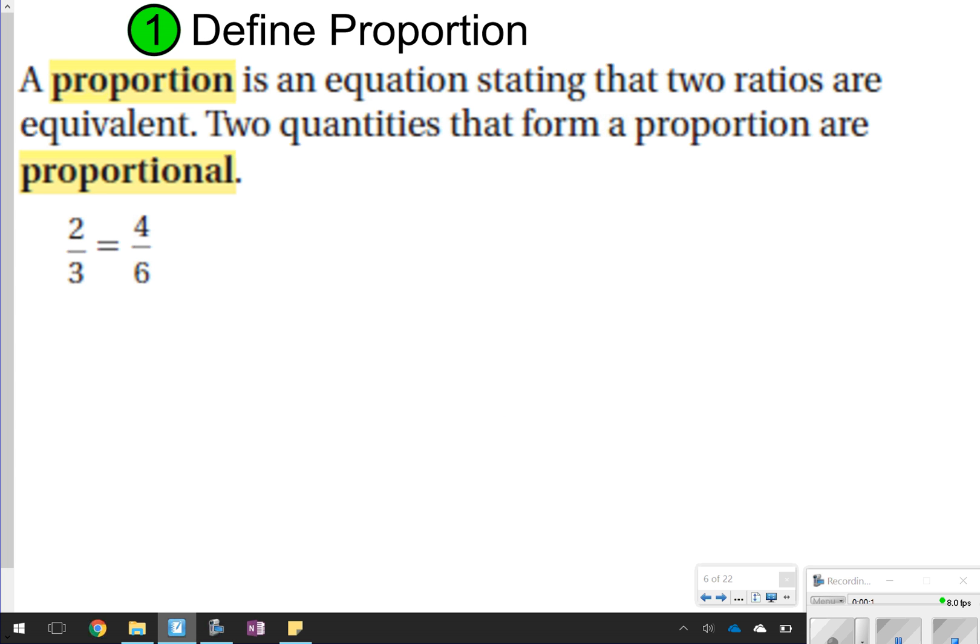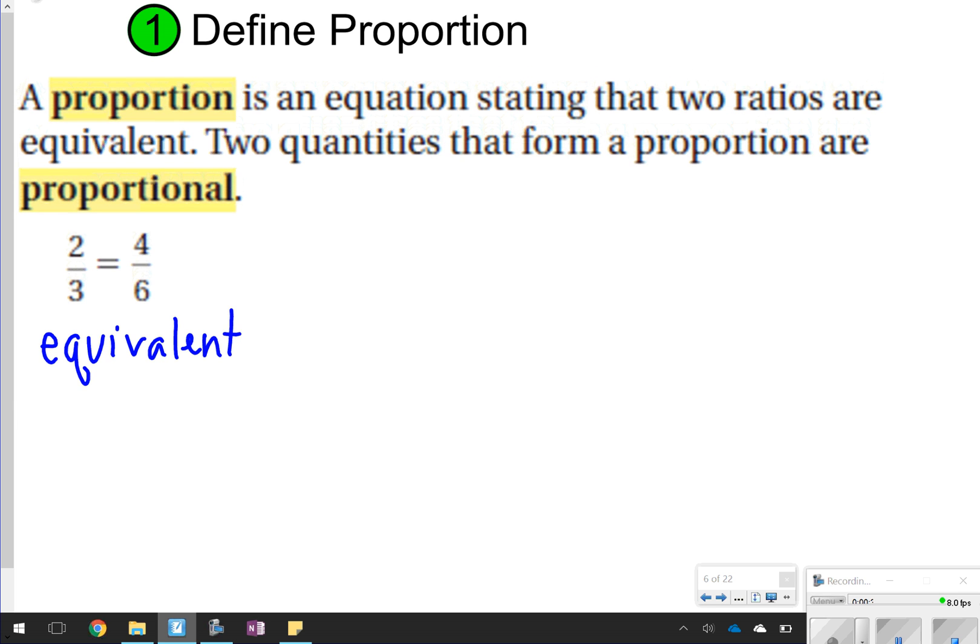The first one we're going to write down is the definition of a proportion. You are going to pause this portion of the video and write once I'm done wording it. A proportion is an equation stating that two ratios are equivalent. That's the same thing as equivalent fractions. And whenever you have something that is proportioned, or showing that they're proportions, you would just say that they are proportional. So let's go ahead and take time now to pause the video, write down the definition, even write this example down, and then we're going to try some questions.